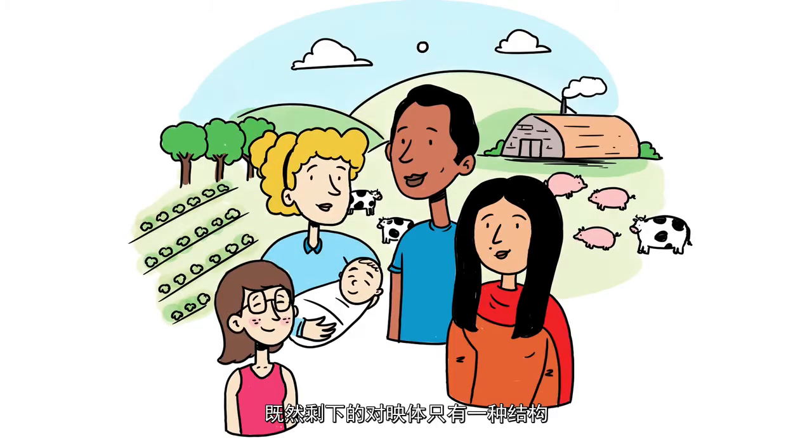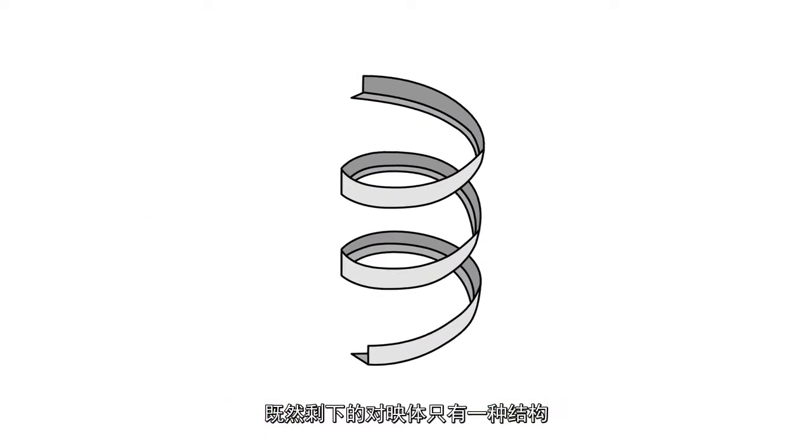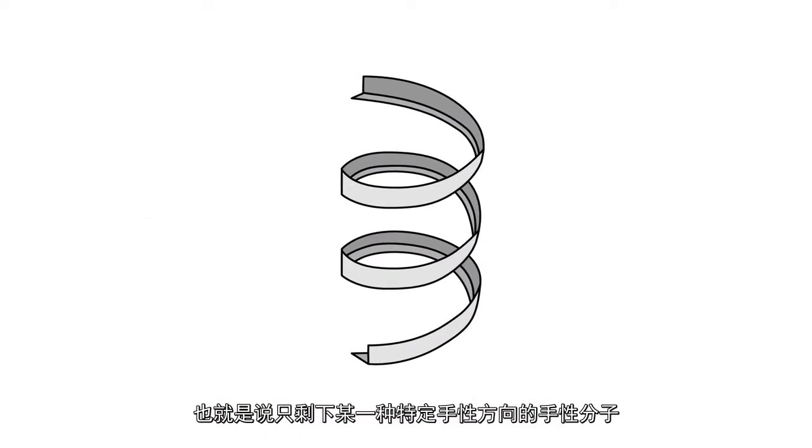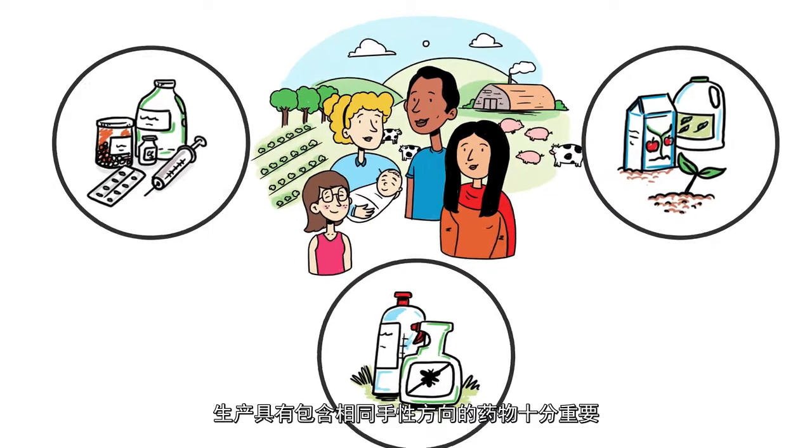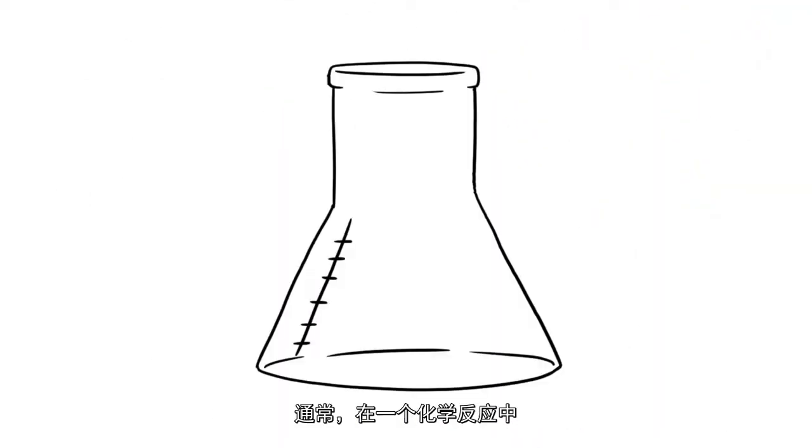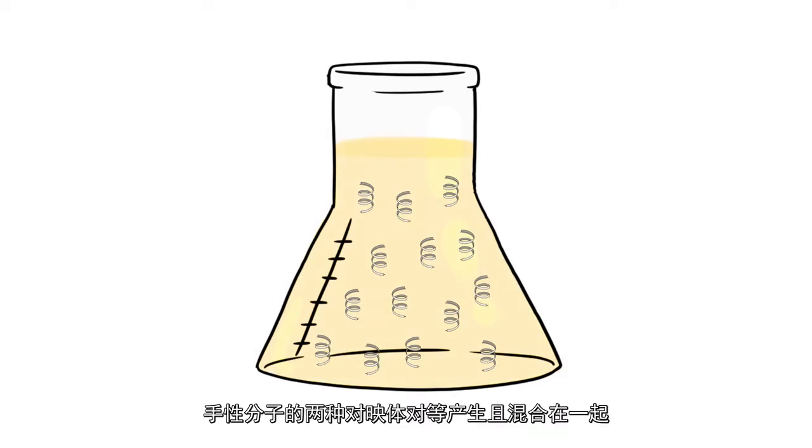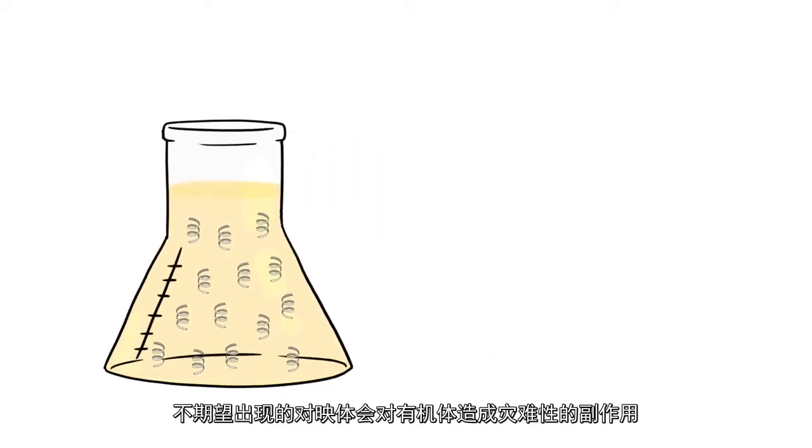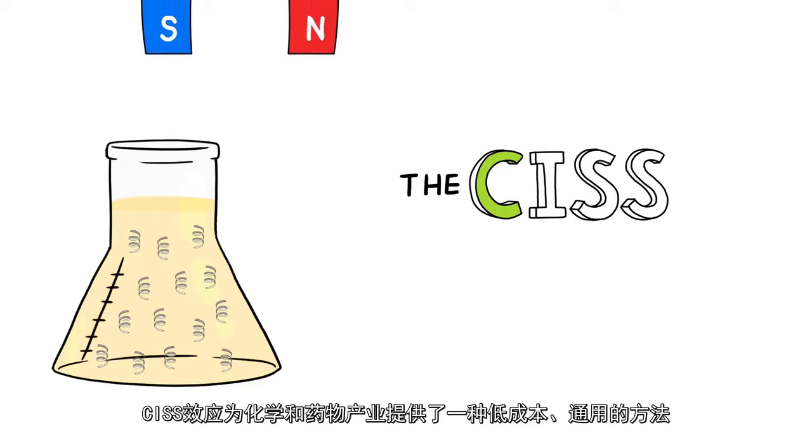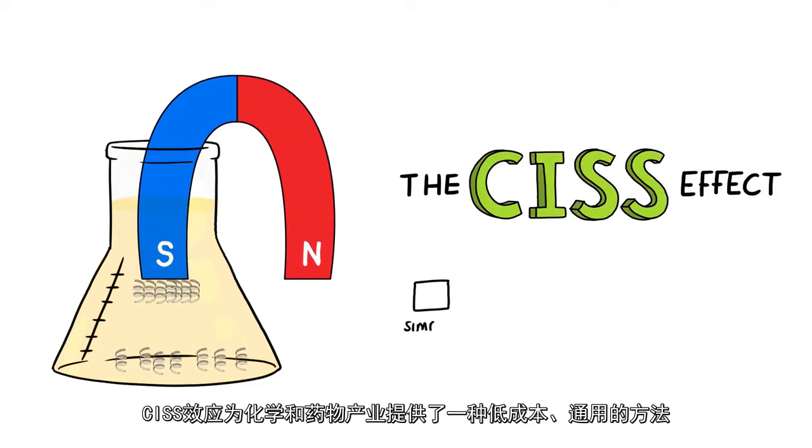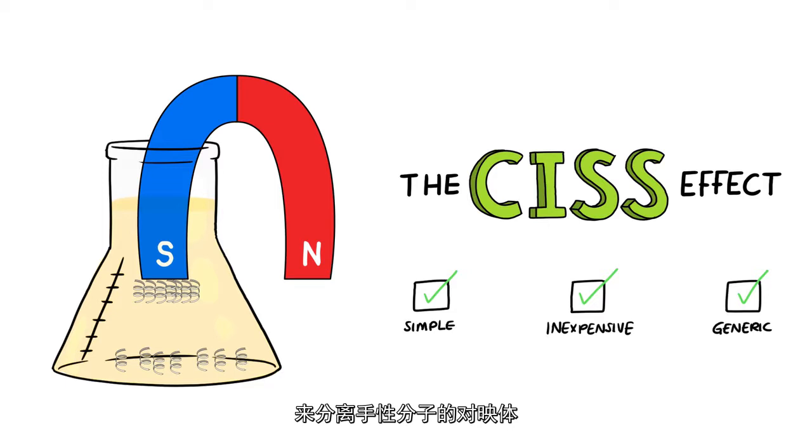Since life is based on molecules with only one enantiomer, namely chiral molecules that have specific handedness, it is important to manufacture drugs of the same handedness. Typically, in a chemical reaction, both enantiomers are equally produced in a mixture. The undesired enantiomers may cause side effects disastrous to living beings. The SIS effect helps the chemical and pharmaceutical industry achieve an inexpensive and generic method for enantiomer separation.